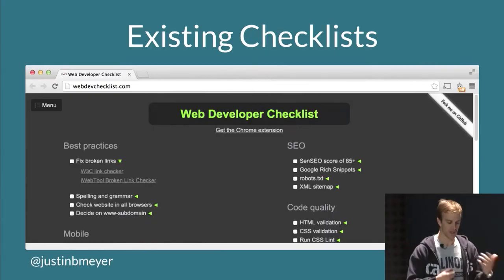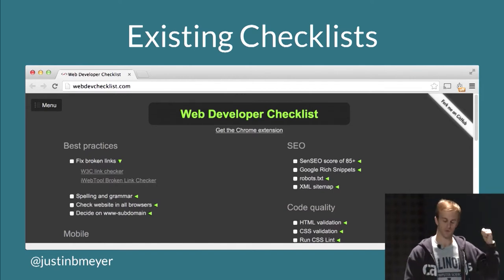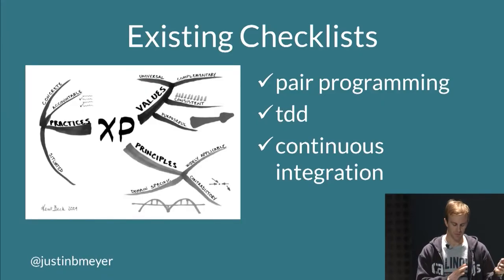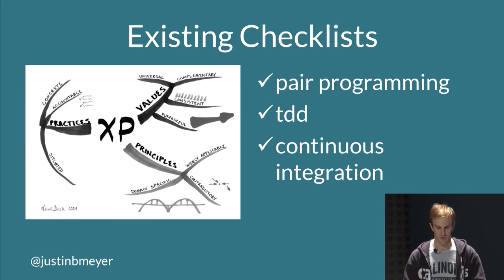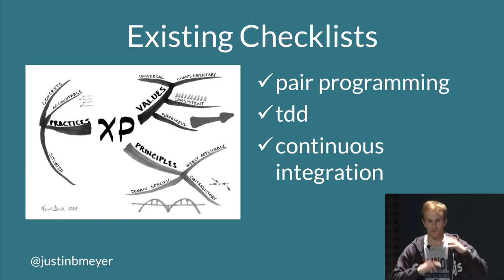I started looking at existing checklists — there are a lot of good web developer checklists online — but to me they didn't really talk about what influences success, and that's what I care most about. Someone pointed out that my checklist is similar to a development methodology, but I like checklists more than development methodologies because there's no philosophy, no values, no holy wars on extreme programming versus Scrum. It's just: did you do it or did you not?